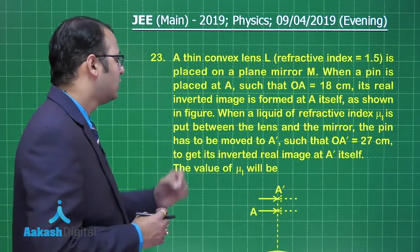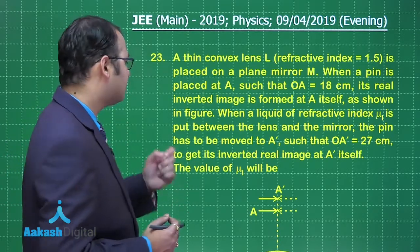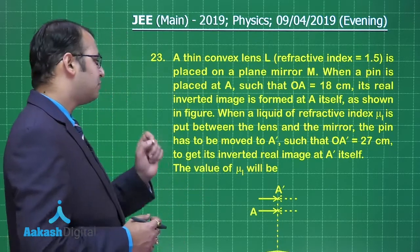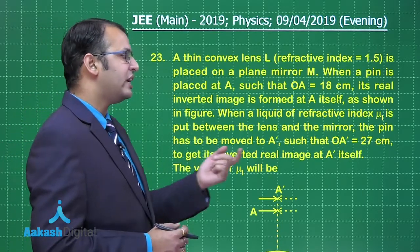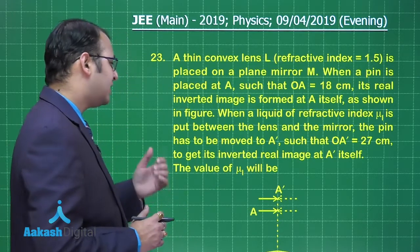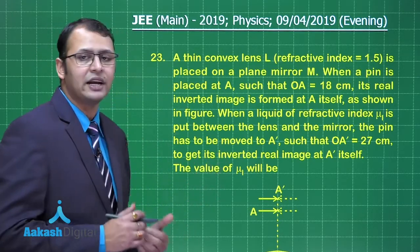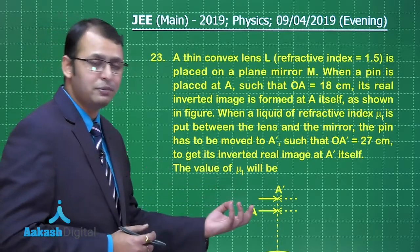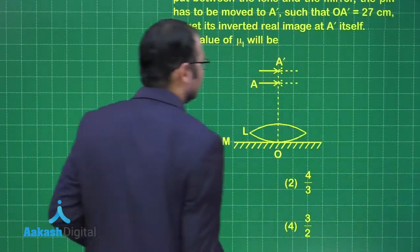When a liquid of refractive index μL is placed between the lens and the mirror, the pin has to be moved to A dash such that OA dash equals 27 centimeters to get its real inverted image at A dash itself. The question asks for the value of μL.